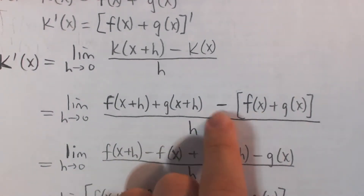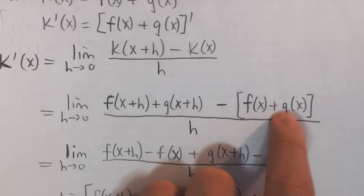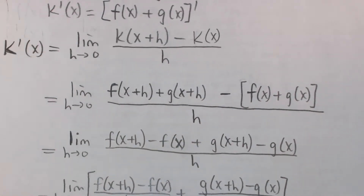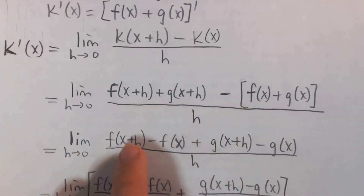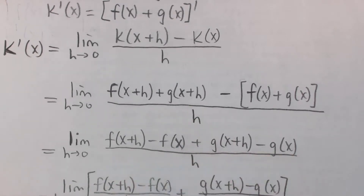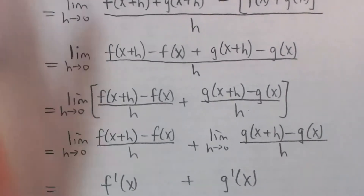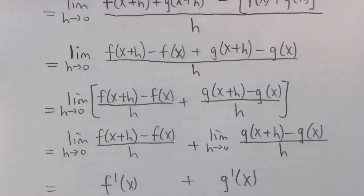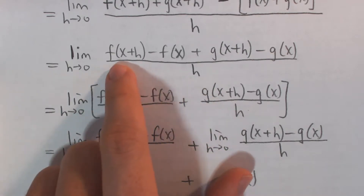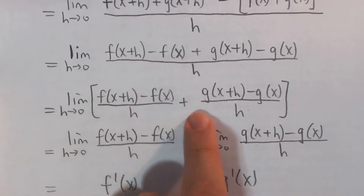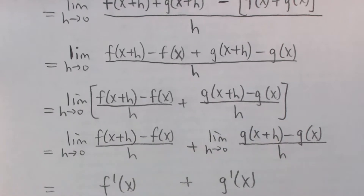Applying the negative sign to both terms gives us negative f of x minus g of x. So we have f of x plus h minus f of x, plus g of x plus h minus g of x — we're already forming the derivatives of f and g. We can split this up into the sum of two fractions divided by h: f of x plus h minus f of x over h, plus g of x plus h minus g of x over h. Each of these fractions is recognizable as the derivative of f and derivative of g, just missing the limit sign.